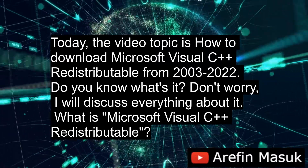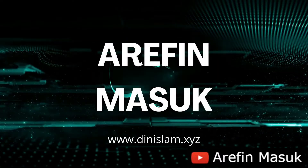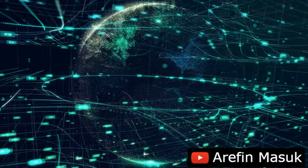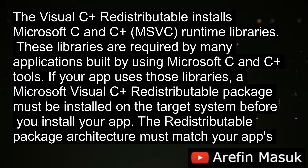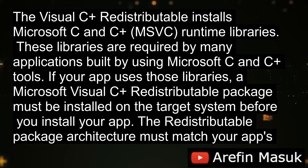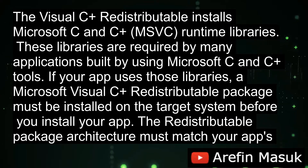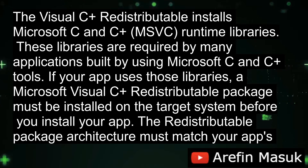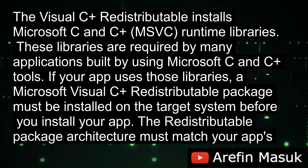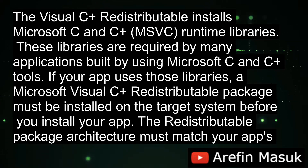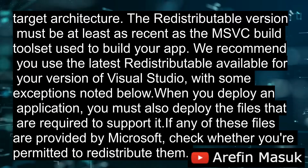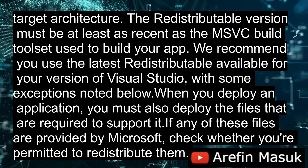What is Microsoft Visual C++ redistributable? The Visual C++ redistributable installs Microsoft C and C++ MSVC runtime libraries. These libraries are required by many applications built using Microsoft C and C++ tools. If your app uses those libraries, a Microsoft Visual C++ redistributable package must be installed on the target system before you install your app. The redistributable package architecture must match your app's target architecture, and the redistributable version must be at least as recent as the MSVC build toolset used to build your app. We recommend you use the latest redistributable available for your version of Visual Studio, with some exceptions noted below.